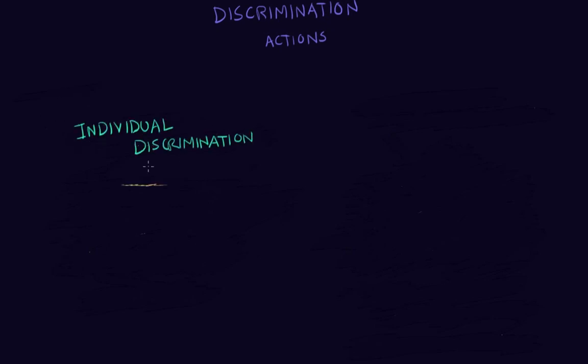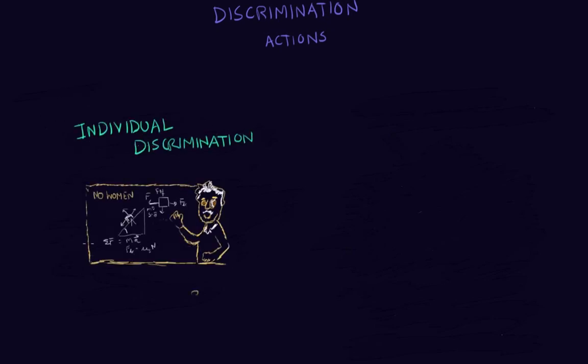Discrimination can occur at the individual level, but it can also happen at an organizational or institutional level. Let's take a look at an example of individual discrimination. So for individual discrimination, you can say that this is a science professor, for example, and he does not like women, so he will not let them in his class, no matter what.